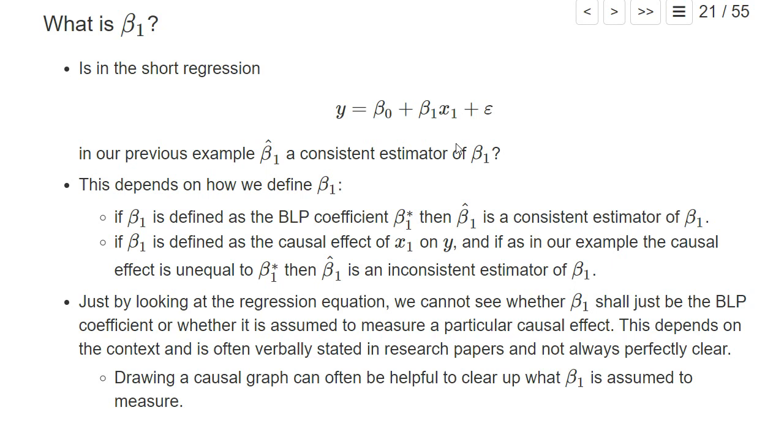It depends on what this beta 1 shall be. If it is defined as a coefficient of the best linear predictor beta 1 star, then the OLS estimator is probably a consistent estimate of it. Some weak assumptions have to be satisfied, but often that is the case.